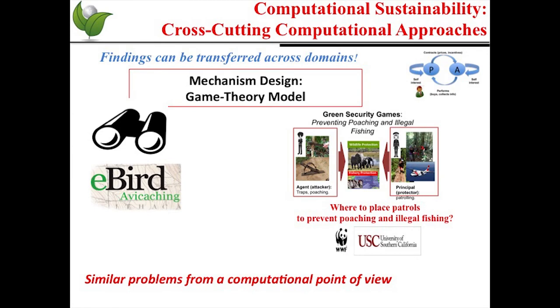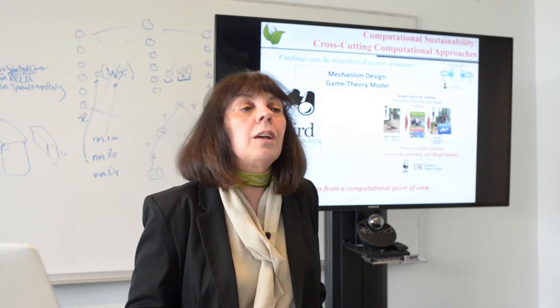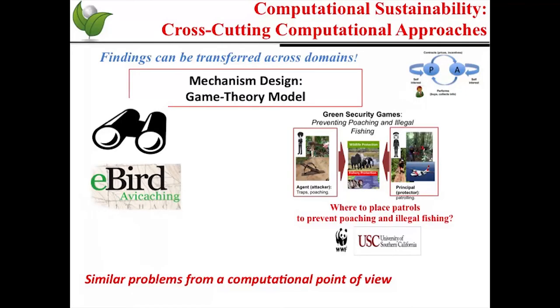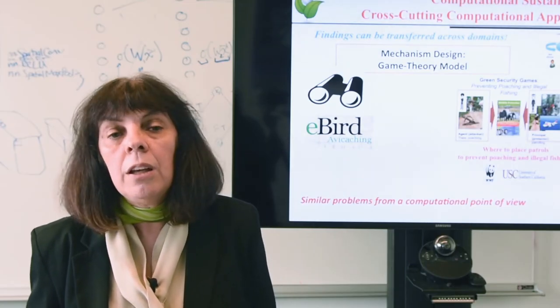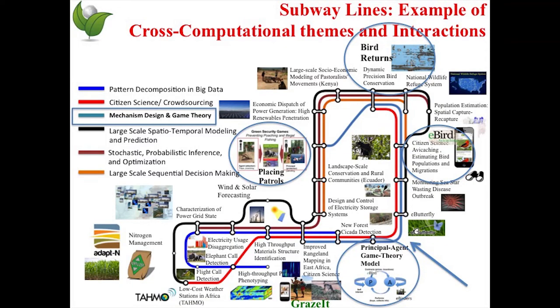Computational sustainability aims to develop cross-cutting computational approaches. Findings can be transferred across domains — this has been a key driving force behind dramatic advances in information and computational technology, just like the universal computer. For example, the game theory model used for avicaching is also used to decide where to place patrols to prevent poaching and illegal fishing. Computationally, these problems are similar. We represent these cross-cutting computational themes with colored subway lines — mechanism design and game theory is the baby blue line. We have many other computational sustainability projects covering a wide range of application domains and computational themes.